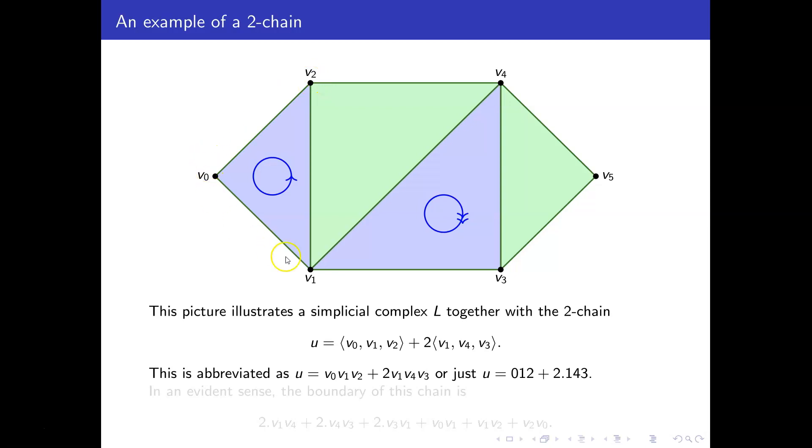Of course, we could start it up here in v₂, v₀, v₁, but that would count the same, because that's an even permutation of v₀, v₁, v₂. So it doesn't really matter where we start, we just have to know whether we're going clockwise or anticlockwise. And that's what's indicated by this arrow.